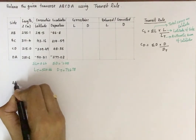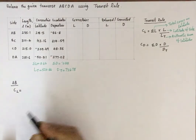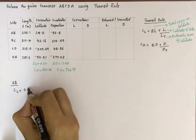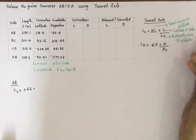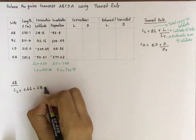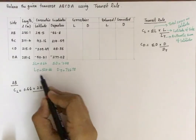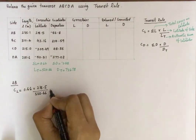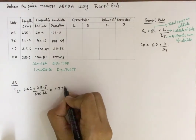For side AB, the correction to latitude equals the total error in latitude 0.66, multiplied by the latitude of AB which is 218.5, divided by the arithmetic sum of latitudes 520.66. This gives a value of 0.276.